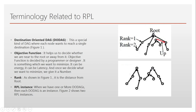The objective function helps us decide whether we are near the root or away from it. It is decided by the designer or programmer, and is represented as an integer number. What we want to minimize is the objective function — it can be energy, latency, or anything else. The rank indicates distance from the root: a node that is 1 hop away has rank 1, and a node 2 hops away has rank 2.